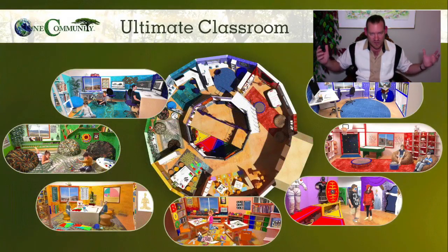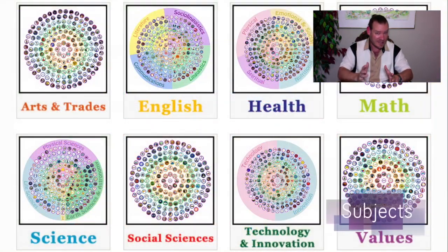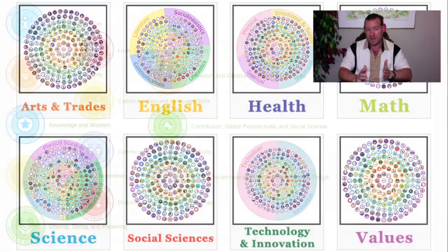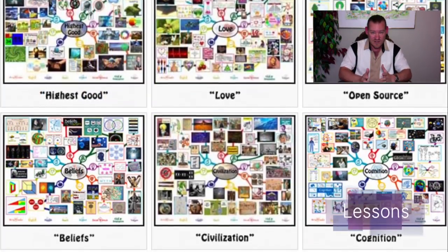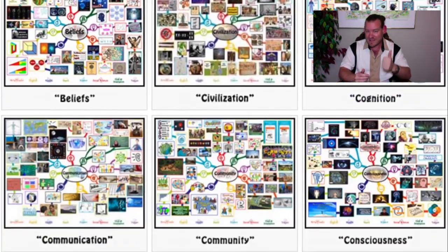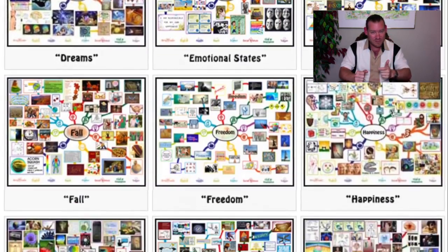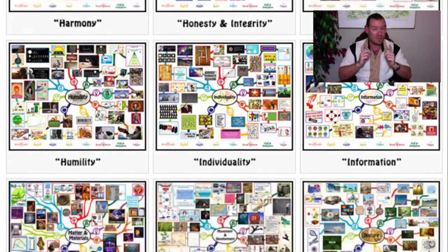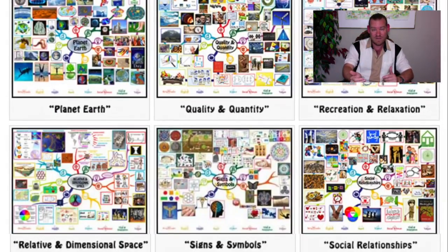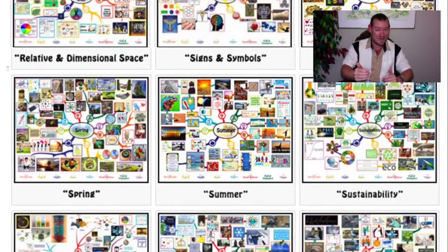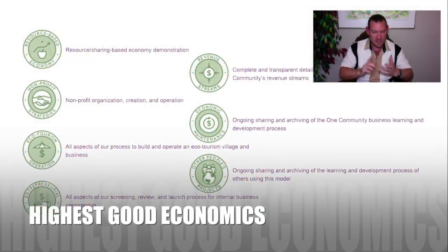Applying permaculture globally, bringing that knowledge and feeding it back into a global online network of information so people can access it anywhere in the world — showing what's possible and inviting everybody to participate in whatever way works best for them. Everything is designed to be implemented as either the complete model or as individual components. Rather than handing people food — instead of giving somebody a fish — we're teaching them how to fish: teaching them how to build their own homes, grow their own food.